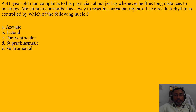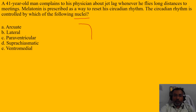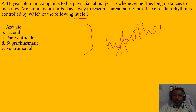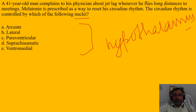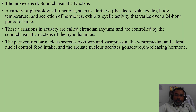The question is: the circadian rhythm is controlled by which of the following nuclei? The answer is D - suprachiasmatic nucleus.